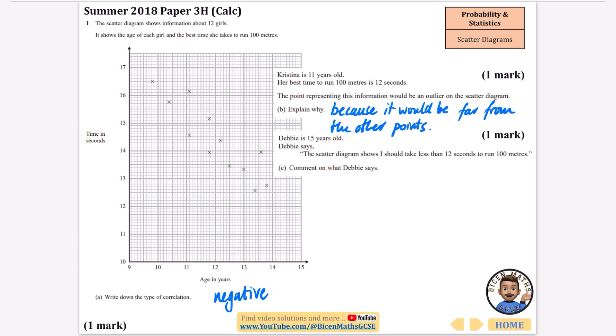Debbie is 15 years old. Debbie says the scatter diagram shows I should take less than 12 seconds to run 100 meters. Comment on what Debbie says. We don't have any information about 15 year olds, so this is extrapolation because it's not like this is going to keep going. When you get to like 18 you start doing it in like 10 seconds? We know that in reality it's going to start to level off. This is outside our range of data, so is unreliable. Debbie may not be correct. As an extra thing this is called extrapolation.